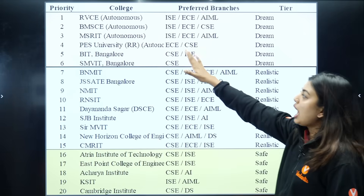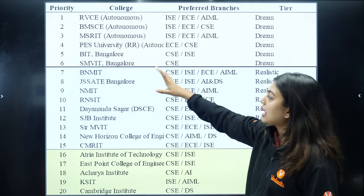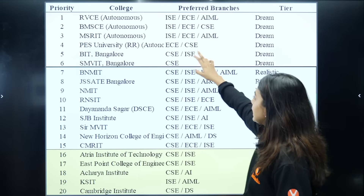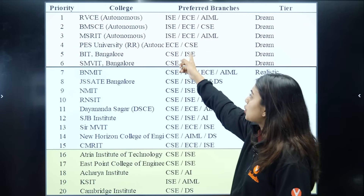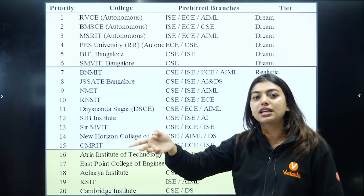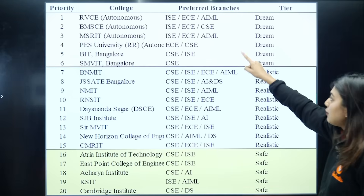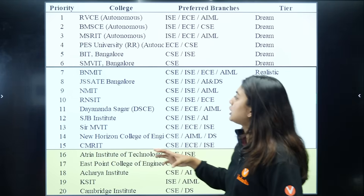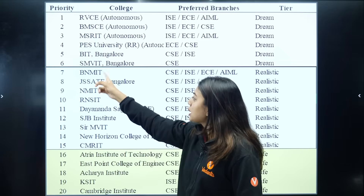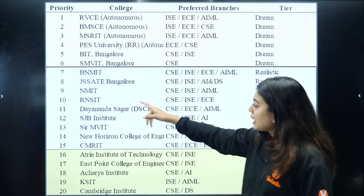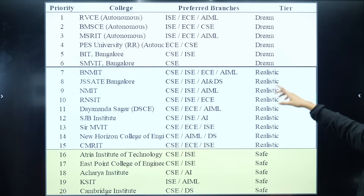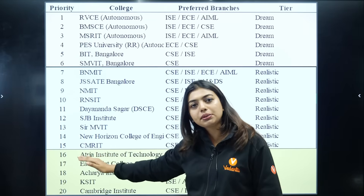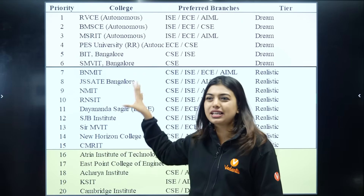Let me show you an example. If your rank is 20,000, here is a sample priority list on a spreadsheet: first six are dream colleges — RV, BMS, MSRIT, PESU, BIT, and SMVIT — with branches like ISC, ECE, Artificial Intelligence, and Computer Science Engineering mixed in. I've chosen different branches across colleges. Next come realistic choices: BNMIT, SS, JSS, NMIT, RNSIT, Rayandasagar, SJB — these are 100% sure seats.